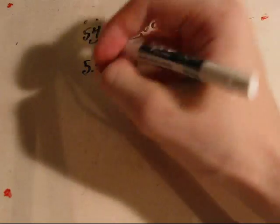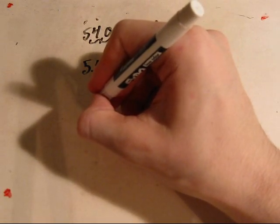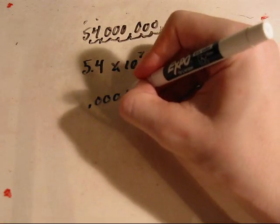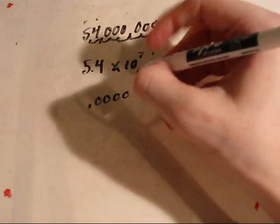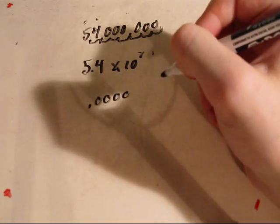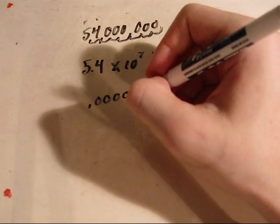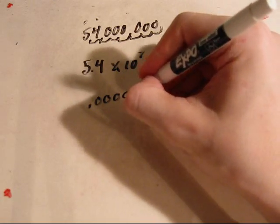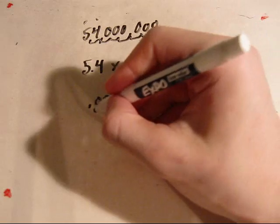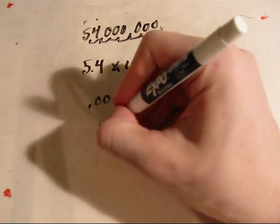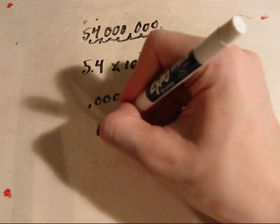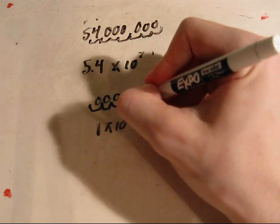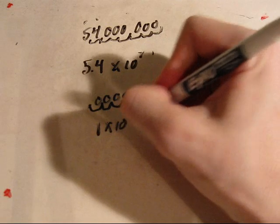If it were something smaller, for example, in electronics you deal with things in the microfarads on capacitors, which is a millionth of a farad. Down here, it's 1 times 10 to the negative 1, 2, 3, 4, 5, 6th power.